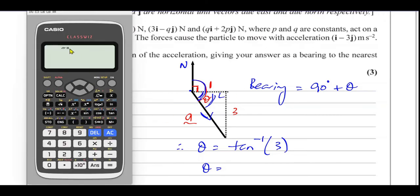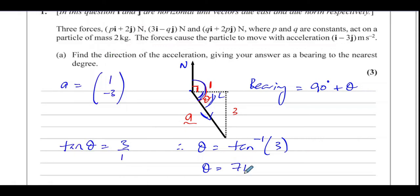So we take the calculator and we make sure that we are in degree mode. And we press inverse tan of 3, which gives us 71.565 degrees.